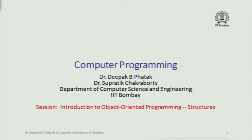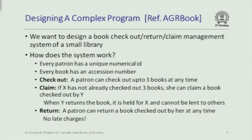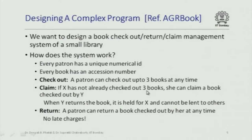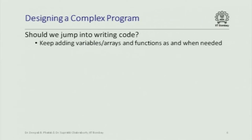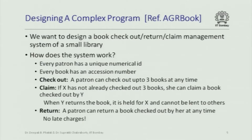Now our first glimpse of object-oriented programming, starting with structures. We are trying to design a book checkout, return, and claim management system for a small library. When you go to our central library, you can issue a book, claim a book, or return a book. So there are three kinds of operations: checking out a book, claiming a book, and returning a book. A patron can check out up to three books at any time. Claiming a book means if you haven't checked out three books and want a book that's currently with somebody, you can place a claim for it.